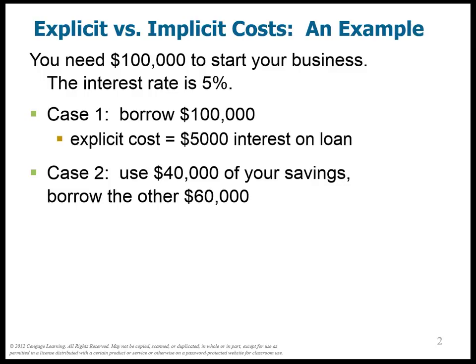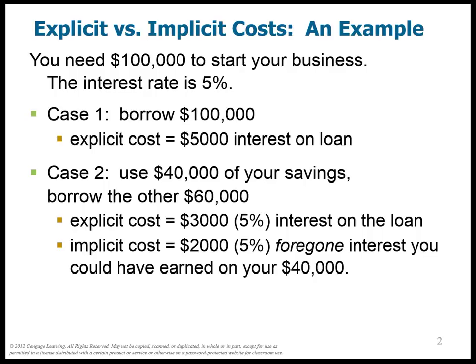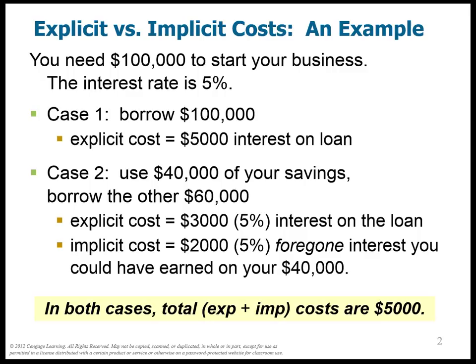In Case 2, let's make it a little more complicated. Use $40,000 of your own savings and borrow the $60,000. There is an explicit cost of $3,000, which is $60,000 times 5% on the loan. If you stop there, you might think it's cheaper to use Case 2. However, you're forgetting about the implicit cost. You could have taken that $40,000, instead of using it in your business, put it in the bank and earned 5% interest — that extra $2,000. You're giving that up, so it's an opportunity cost. Therefore, in both cases, the total costs are $5,000.